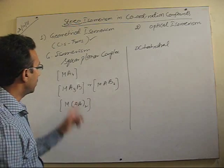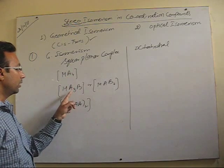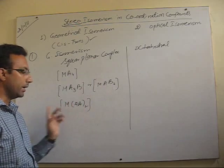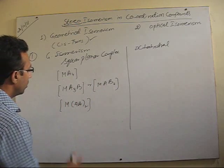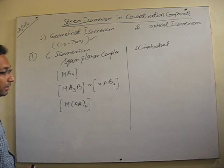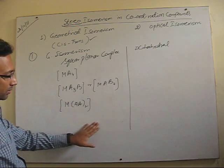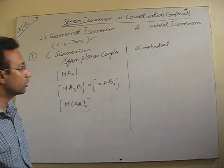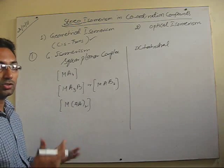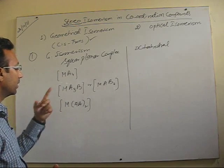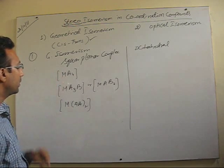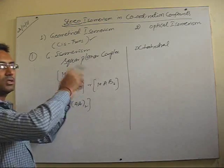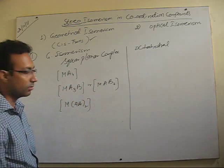You know what A, B, and AA in brackets represent. In all these cases, geometrical isomerism is not possible. Though the structure is square planar and there are different bond angles, in the case of MA4 all four ligands are the same, so if you change their position the environment is not going to change.